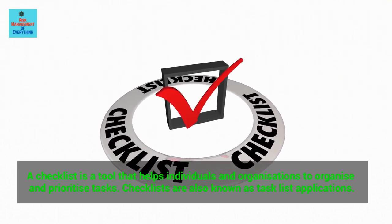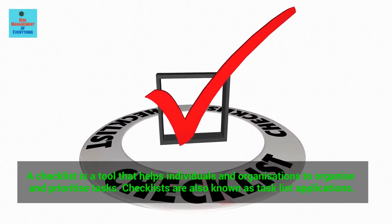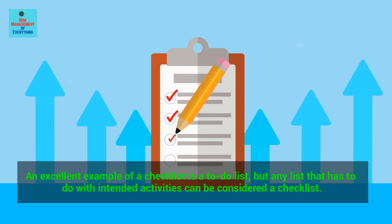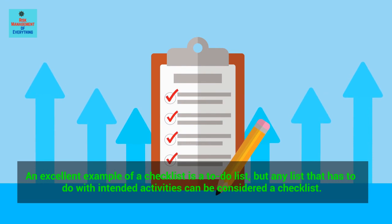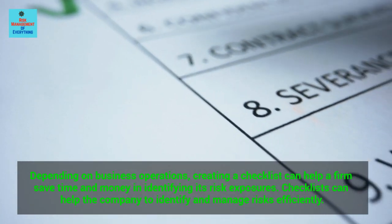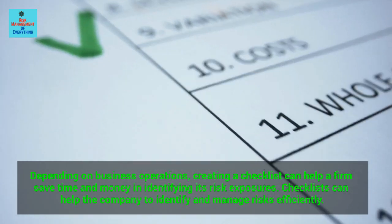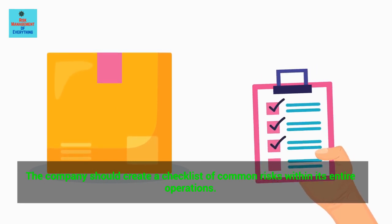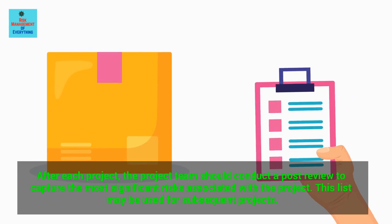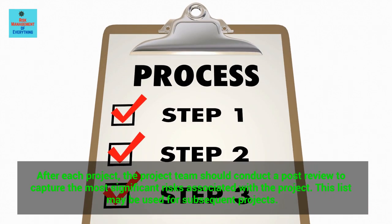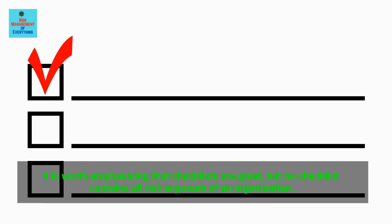Way 13: Checklists. A checklist is a tool that helps individuals and organizations to organize and prioritize tasks. Creating a checklist can help a firm save time and money in identifying its risk exposures. The company should create a checklist of common risks within its entire operations. After each project, the project team should conduct a post-review to capture the most significant risks associated with the project. Note that no checklist contains all risk exposures of an organization.